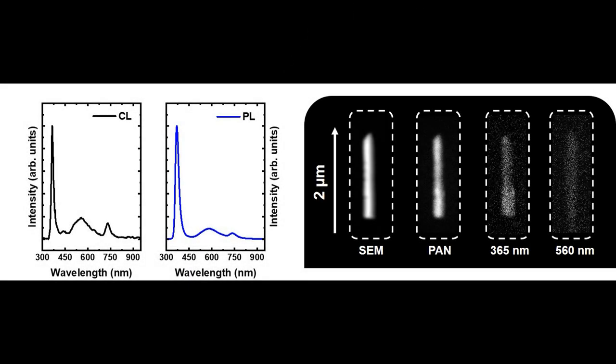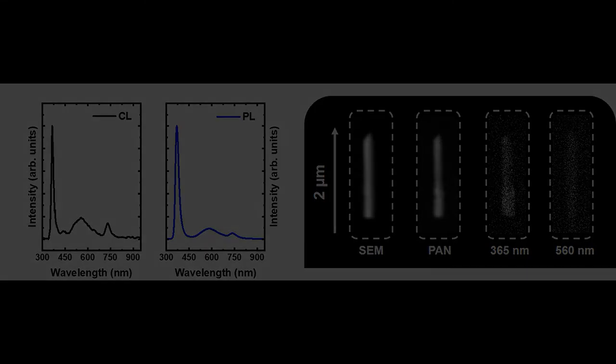To confirm the high crystal quality, photoluminescence of pristine GaN nanowires is carried out at room temperature. A very high intensity band-to-band transition is observed. To evaluate the spatial crystal quality, spatially resolved cathodoluminescence is performed on a single GaN nanowire. The band-to-band transition is observed with the same intensity from bottom to top of the nanowires.